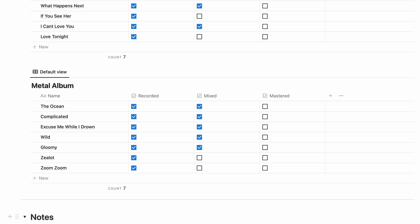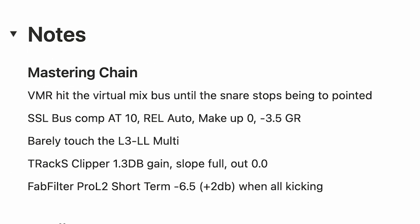For example, if you're working on an album with a band that had similar parts to record for each song, you can make a checklist for the recording process for each instrument — drums, bass, guitars, keys, vocals, background vocals, and so on. Notes is pretty self-explanatory, but here I'd made some notes about the mastering chain for the metal album. I'd mastered one of the songs and wanted an easy way to reference settings, as well as my thought process as a starting point for the rest of the album.